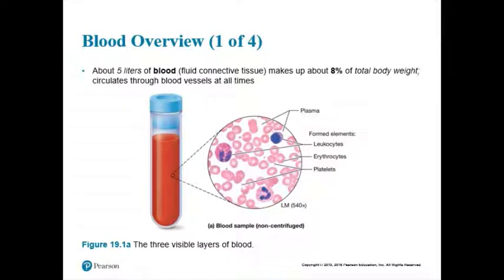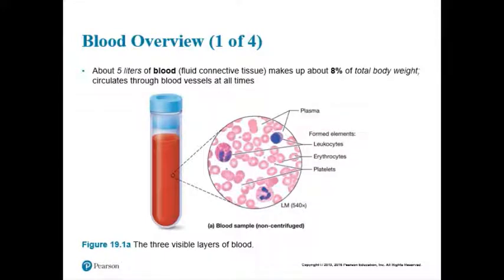Before we even start this chapter, you know stuff from A&P 1. Because we're talking about blood, the tissue. You've looked at all tissues in the body in A&P 1. Remember, blood was a type of connective tissue. Like all tissues, it's made up of cells that are surrounded by an extracellular matrix. You might even remember some of the cells from A&P 1.